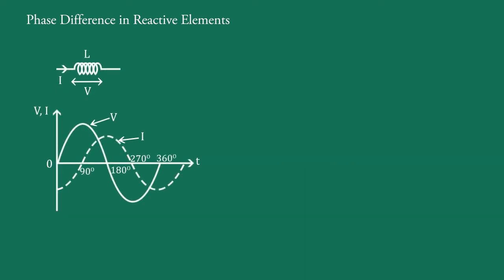Now suppose an alternating voltage is applied across a pure inductor of L henries. The current through the inductance is also alternating and sinusoidal in nature, of the same frequency as that of the applied voltage. But the current and voltage do not rise and fall simultaneously — voltage becomes maximum at one point while current becomes maximum at a different point, so they are not in phase with each other.